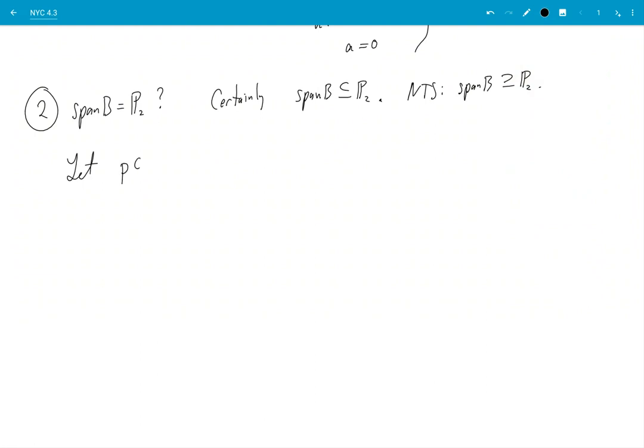So what I'm going to do is I'm going to say I'm going to prove that if you take any element here it must also be here. So let p be in P₂. So that implies that p is equal to a constant term plus et plus ft². It has to have that form right.